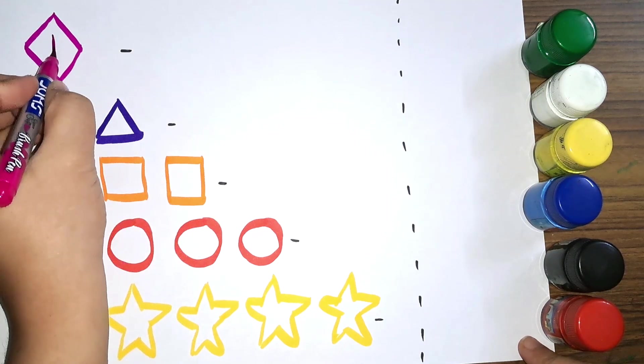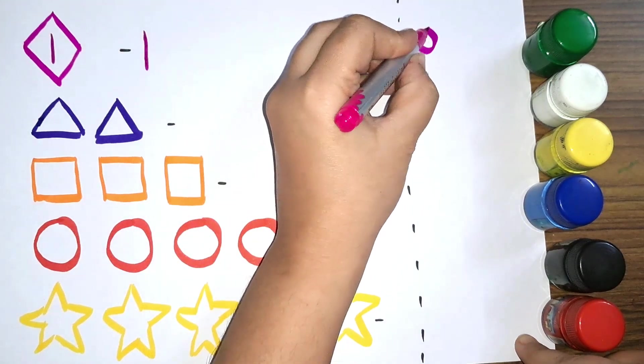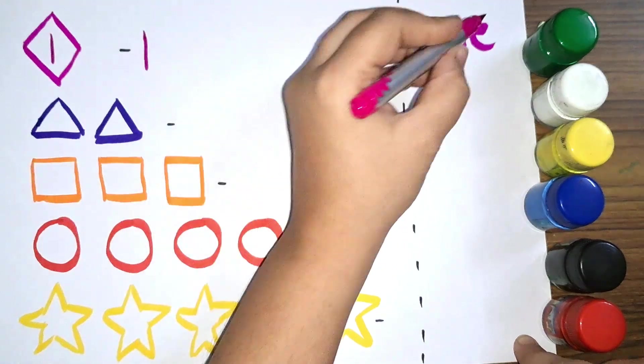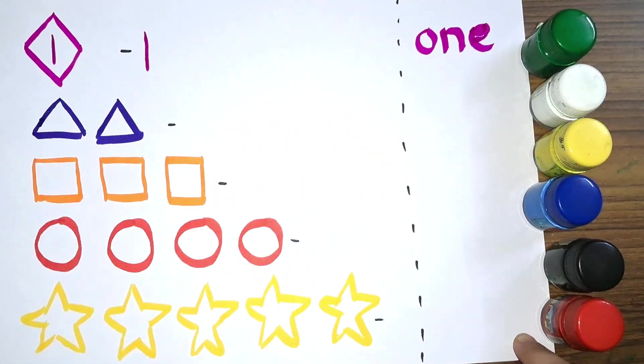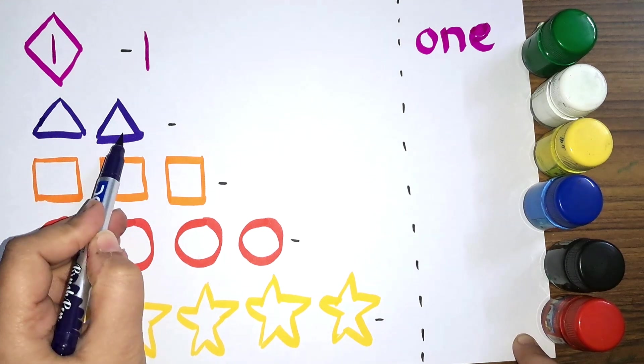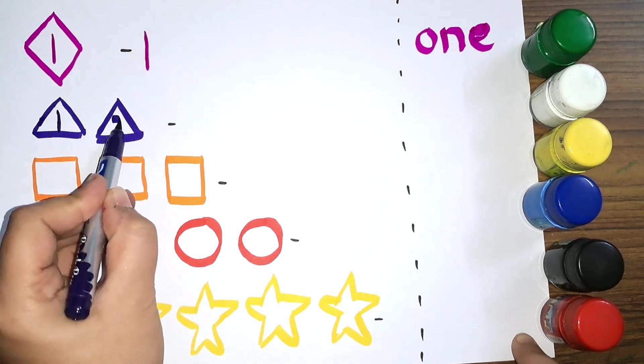One, O-N-E, one. One diamond. We have triangle. How many triangles do we have? One, two. Two triangles.